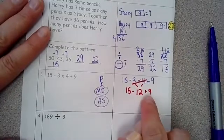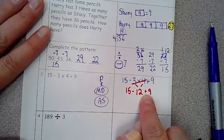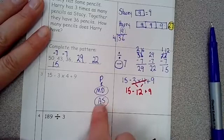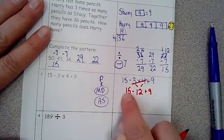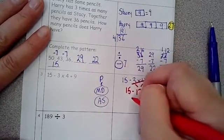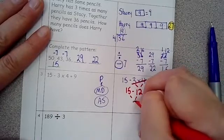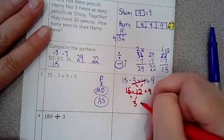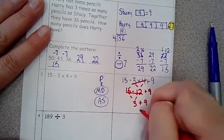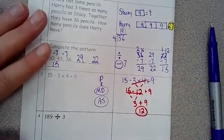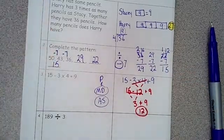Then I've got subtraction and addition left. So it's whichever one comes first going left to right. So I'm going to go 15 minus 12. 15 minus 12 is three. I'm going to mark that out, write plus nine, and then this is three plus nine is 12. And you are done.